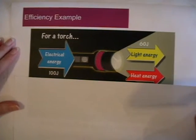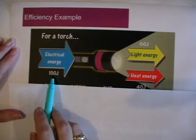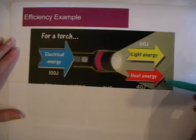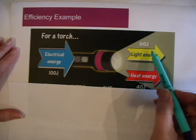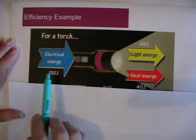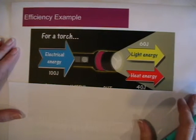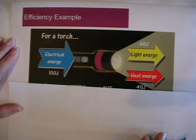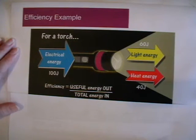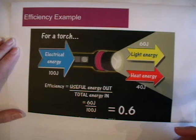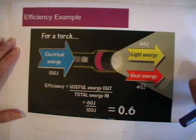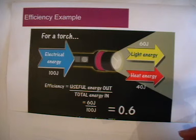The next example is about a torch. We have 100 joules of electrical energy going in, 60 joules of light energy going out, and 40 joules of heat energy also going out. For a torch, the intended energy conversion is from electrical to light energy. Efficiency = useful energy out over total energy in = 60 joules divided by 100 joules, which gives an efficiency of 0.6. If we wanted to quote this as a percentage, we multiply by 100 and get 60%. Either is acceptable, but if the question specifically asks for a percentage you must convert it; otherwise, leave it as a decimal.